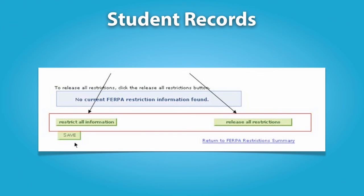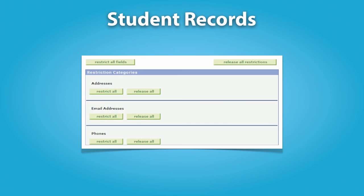However, FERPA allows schools to disclose those records without consent to certain parties, including school officials with a legitimate educational interest, other schools to which a student is transferring, to comply with a judicial order or lawfully issued subpoena, and appropriate officials in cases of health and safety emergencies. Schools may also disclose without consent so-called directory information, such as a student's name, address, telephone number, date of birth, honors and awards, and dates of attendance. However, schools must tell parents and eligible students about directory information and allow them a reasonable amount of time to request that the school not disclose directory information about them. This opt-out option does not apply to military recruiters or to the Pentagon, and thus a school must disclose directory information to representatives from these agencies.